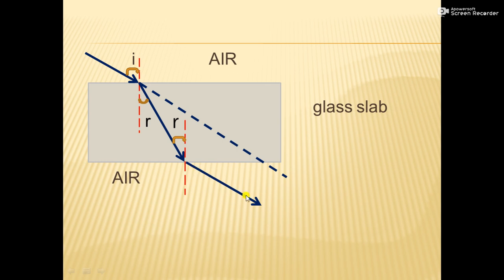This ray is called the emergent ray because it is emerging out into the same medium — air. It starts from air and emerges back out into air. The angle between the emergent ray and the normal is called the angle of emergence. So we have the incident ray, the refracted ray, and the emergent ray.